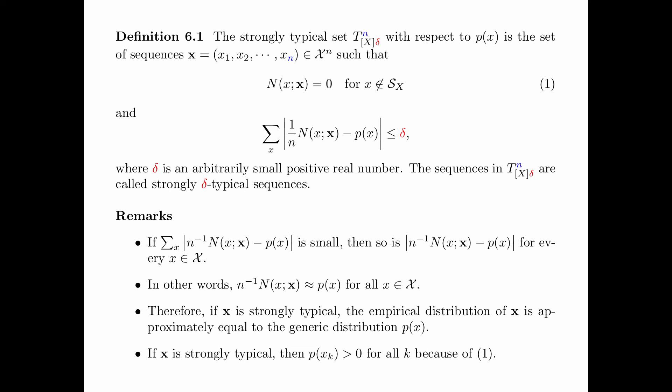Further, if x is strongly typical, then the probability of x_k is strictly positive for all k because in equation 1, it is required that for any x not in the support, it cannot occur in the sequence.